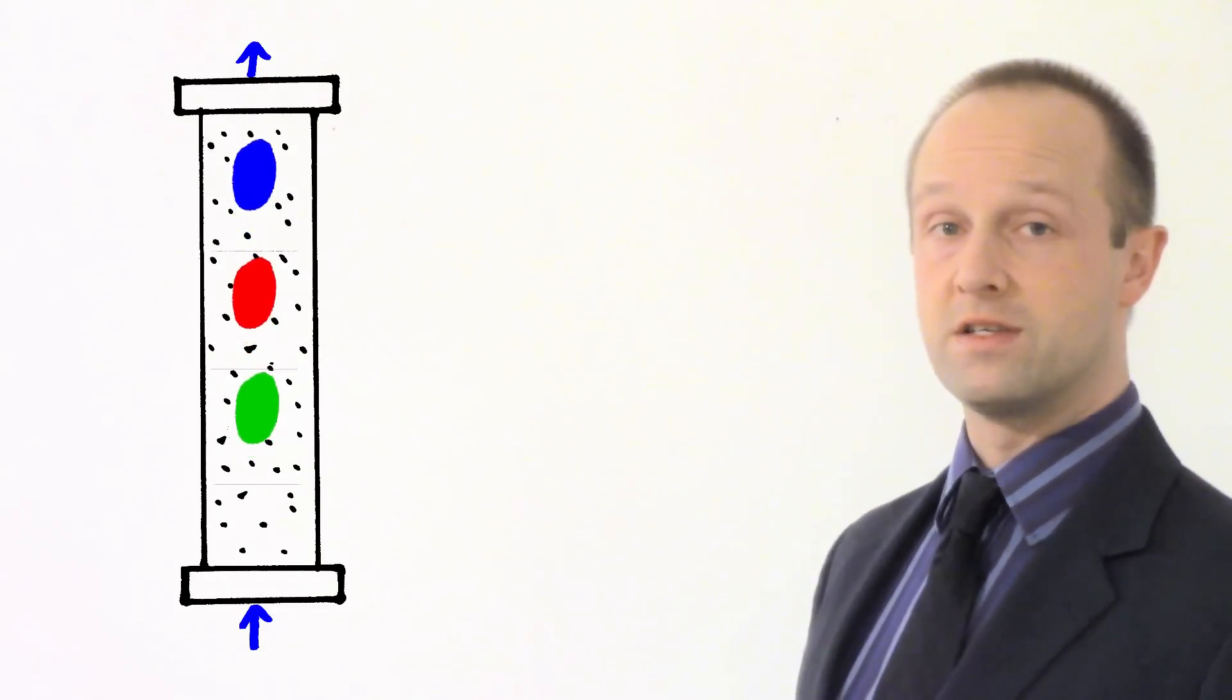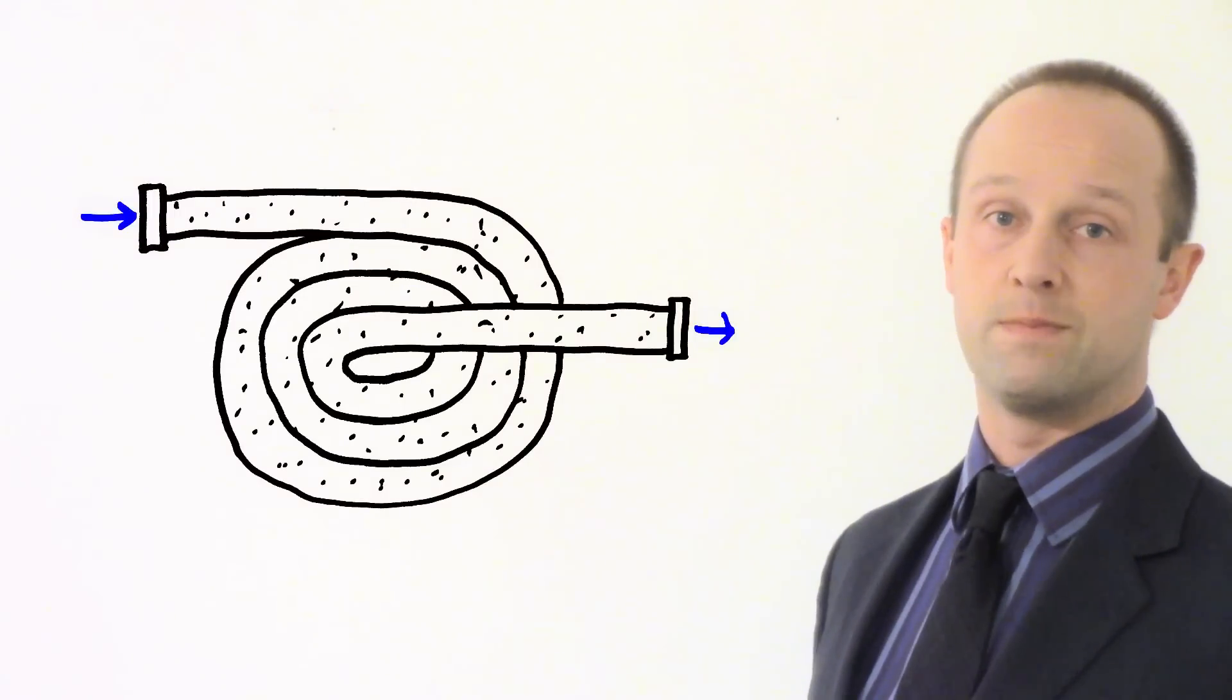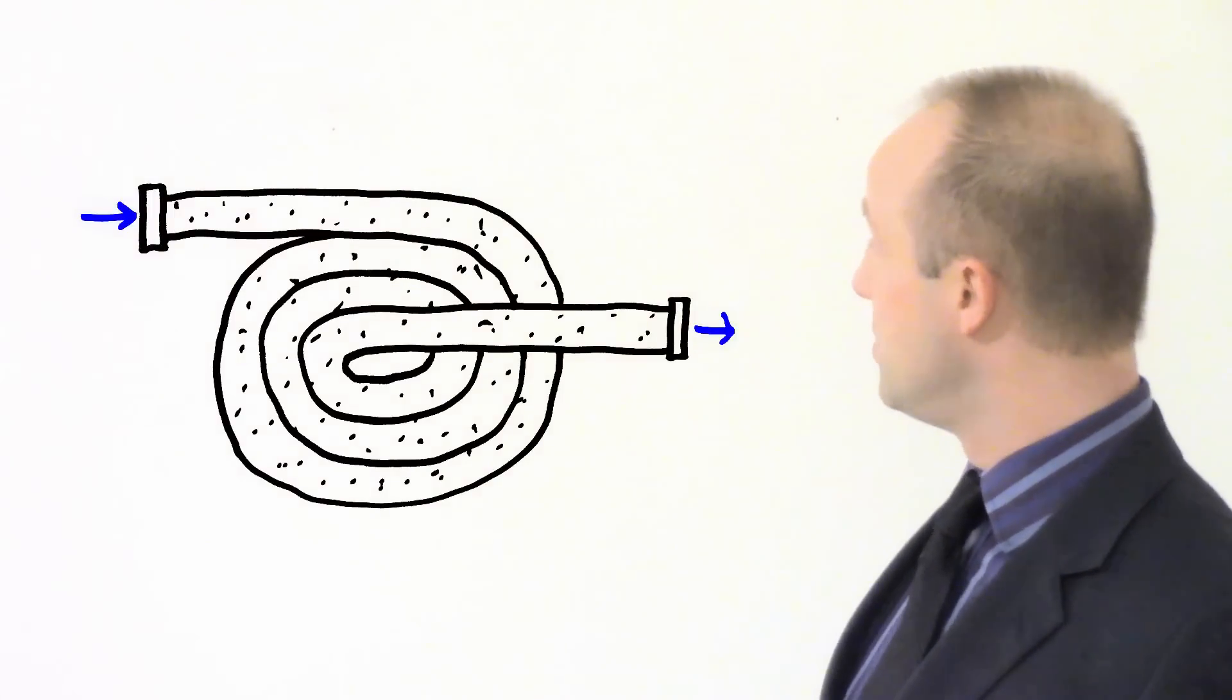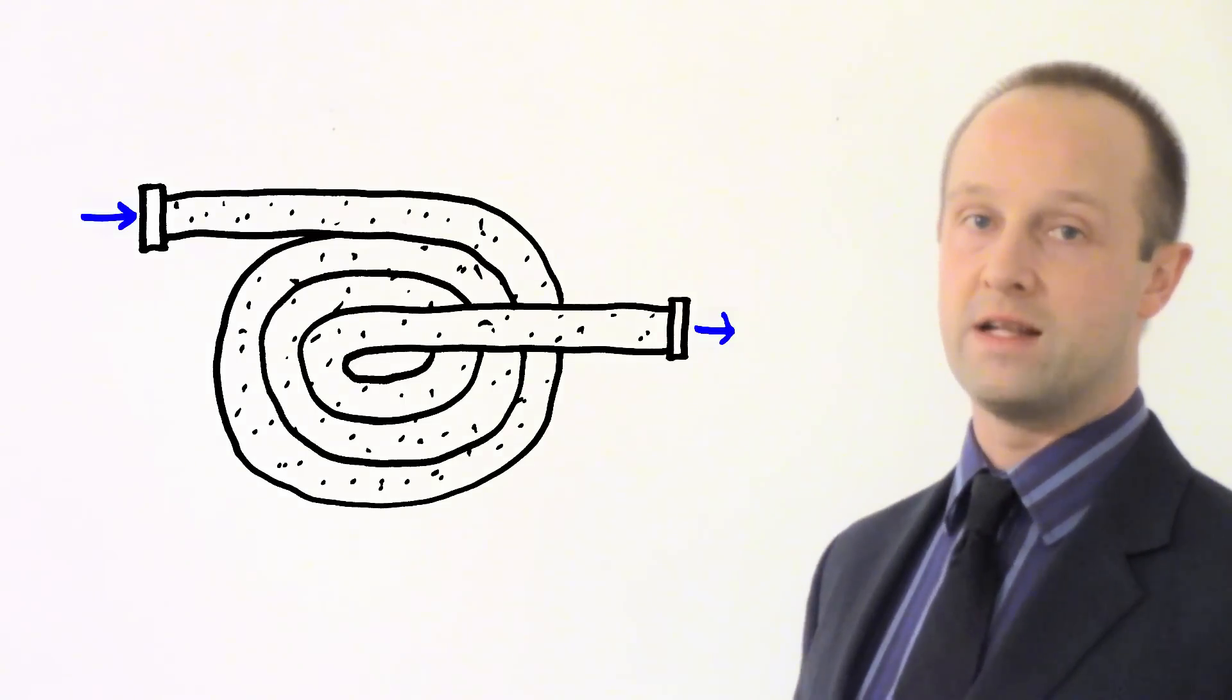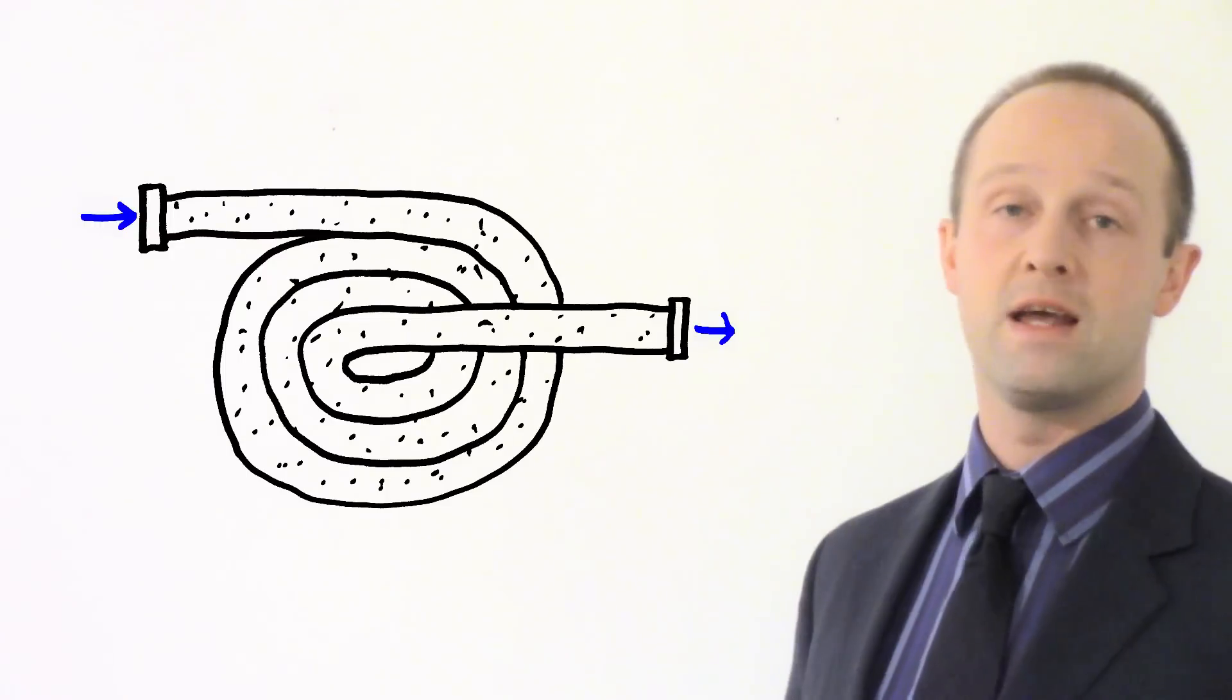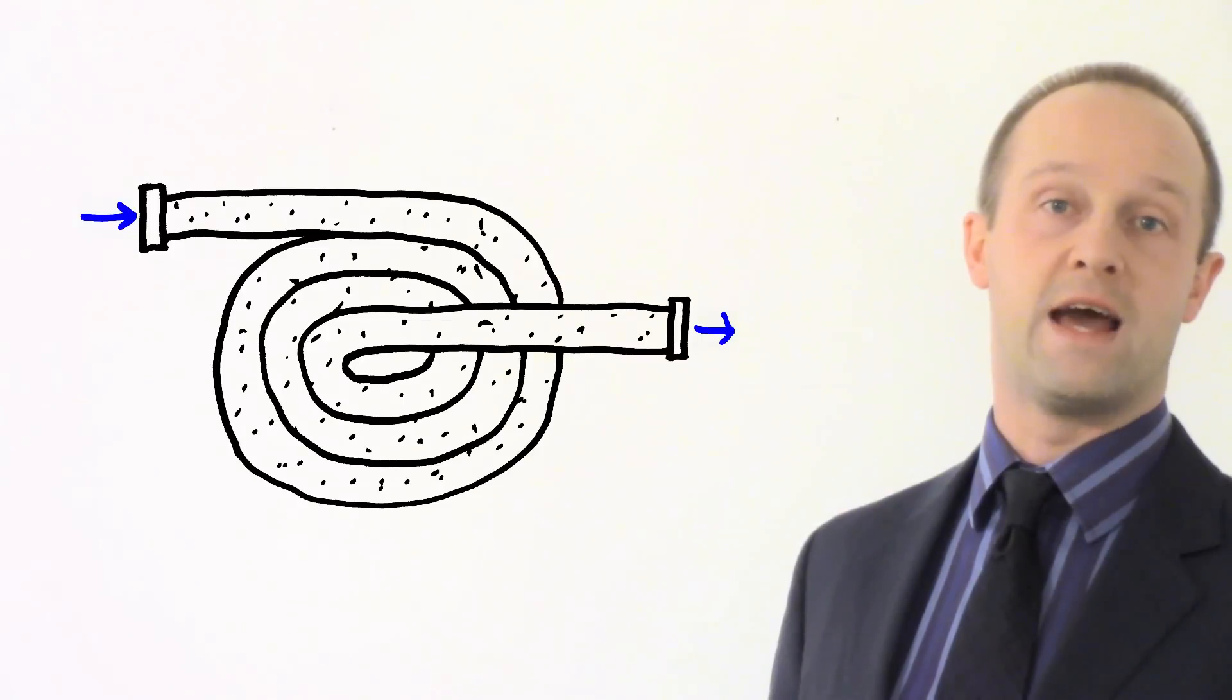So the gas moves along this column and it's often put into a coil like this just to save space. And as it moves along this column, different substances travel along it at different rates because they're carried at different rates. The same as different things moved along our piece of filter paper at different rates. Some got to the end before others.